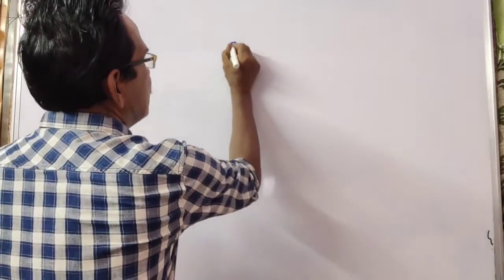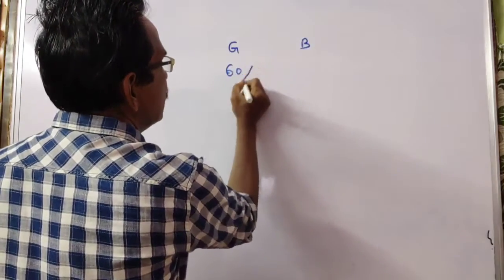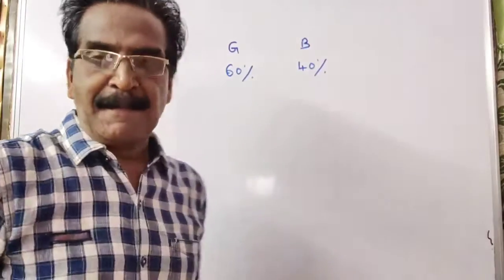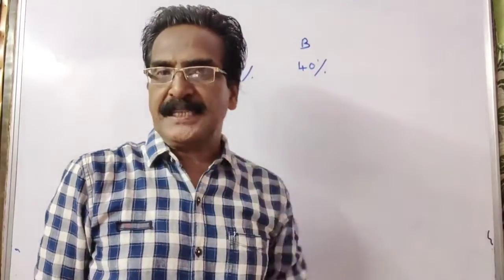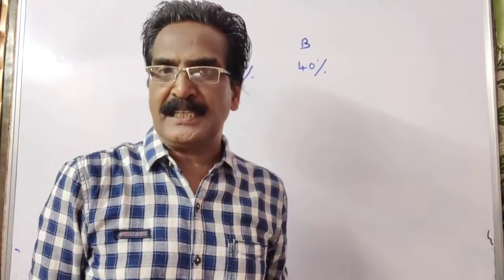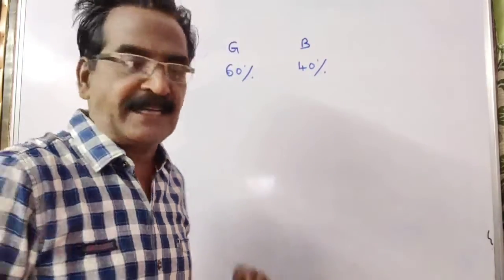See, 60% girls means boys are 40%. Here, girls are 20% more than the number of boys. Actually, girls are 30 more than the number of boys.